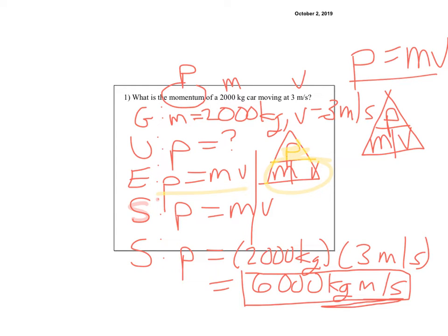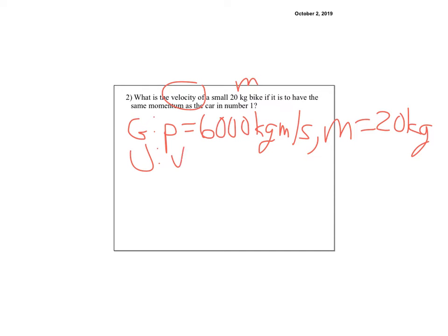All right, momentum number one, it was 6,000. The car was moving at 3 meters per second versus 2,000 kilograms. So now we do the next one, and it says, what is the velocity of a small 20 kilogram bike if it is to have the same momentum as a car in number one? So what was the momentum? Let's write that so we don't forget. So my momentum is 6,000 kilograms meters per second, that weird unit. And then this is kilograms, so we know that's mass. So m equals 20 kilograms, and we're trying to find velocity, so my unknown is v equals question mark.